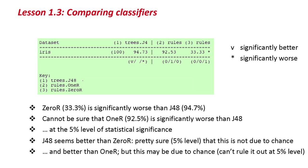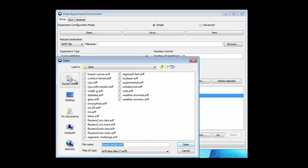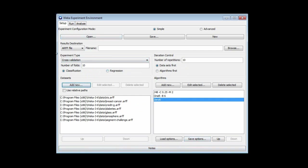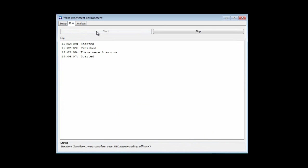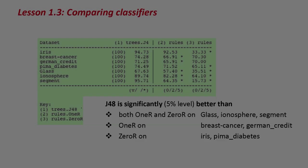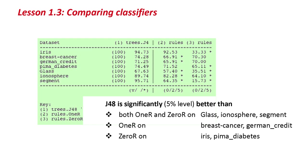Now I could add a bunch more datasets — in fact, I'll just go and do that. I'll re-run the experiment, wait a little bit, and then analyze the results. These are the results I get. At the 5% level of significance, J48 is significantly better than both 1R and 0R on three of the datasets. It's significantly better than 1R on breast cancer and German credit, and significantly better than 0R on the IRIS and diabetes datasets.